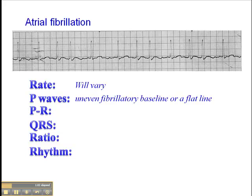What you may see in the place of P waves is an uneven fibrillatory baseline or a flat line. I would not use the baseline — you can see here it's a very uneven baseline — as the basis for making your interpretation of atrial fibrillation, because this can just as easily be muscle artifact from the patient moving or shivering. So fibrillatory waves are really non-diagnostic.